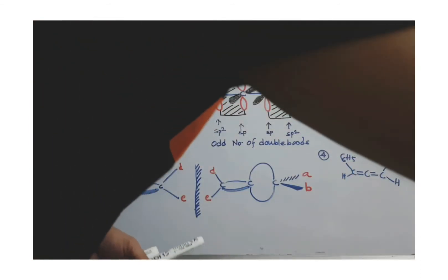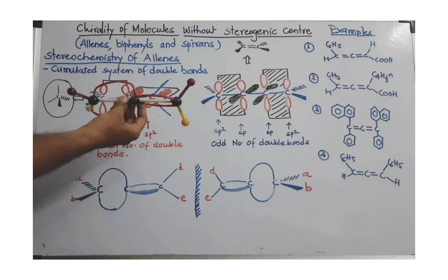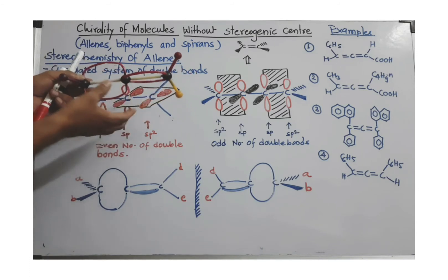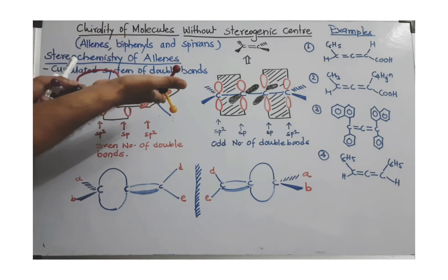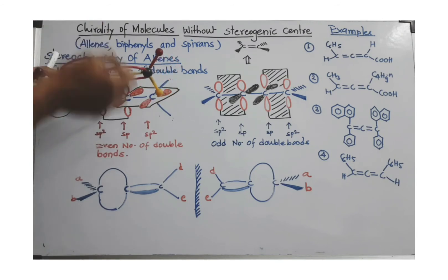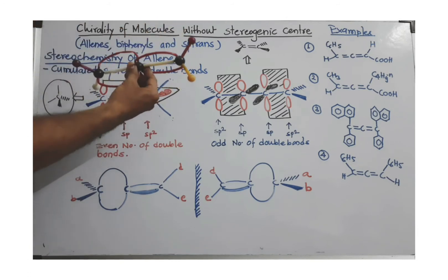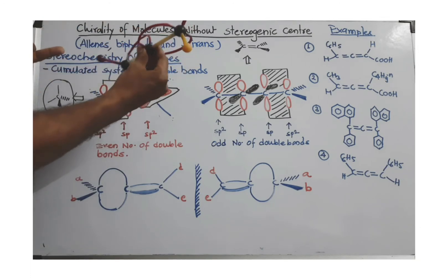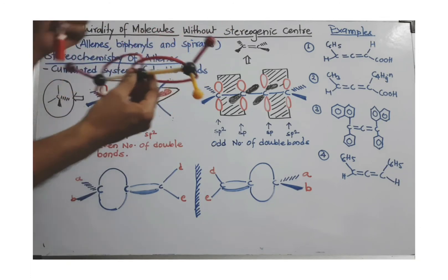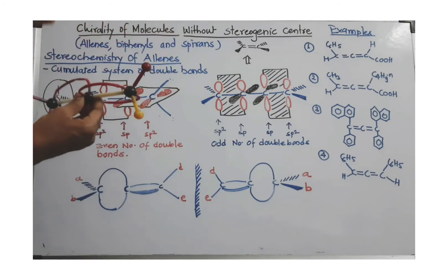Here is a physical model of a simple allene. Looking at the model, you can see the two terminal carbons. One double bond is present in this plane, and the other double bond is actually perpendicular to this plane. The four groups or atoms at the terminal carbons are not in one plane when an even number of double bonds is present — it is like a tetrahedral carbon arrangement.